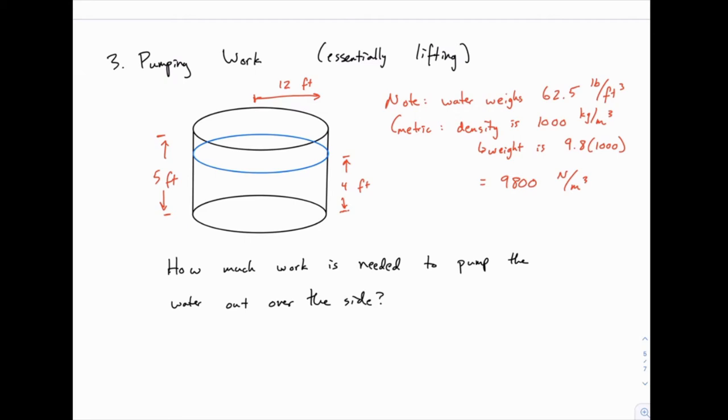Now if you think about this, like with the 200 pound chain that we lifted to the top of the building, it's the same principle here. Some of the water needs to be lifted a different distance than the rest of it. The top layer of water only needs to be lifted one foot, while the bottom layer needs to be lifted five feet all the way to the top of the tank. So because of that we can't just multiply force and distance and be done, we need to use an integral.